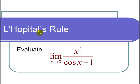This is a video on using L'Hopital's Rule twice. The question is to evaluate the limit as x approaches 0 of x squared divided by cosine of x minus 1.